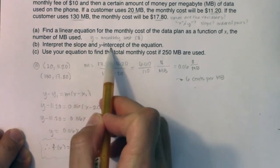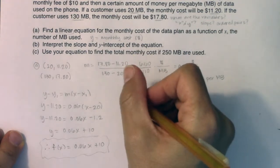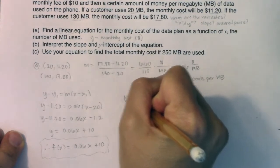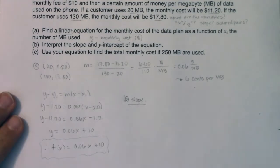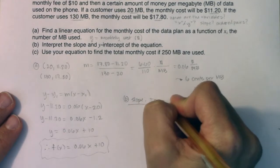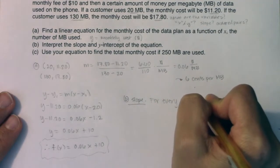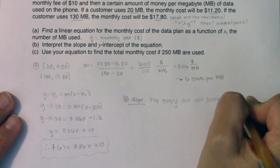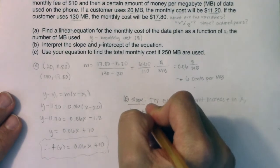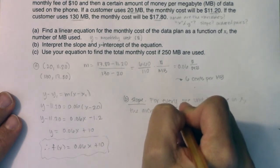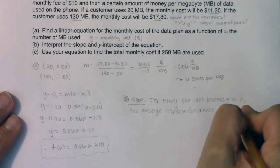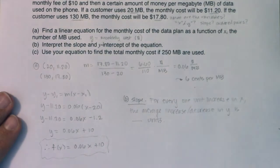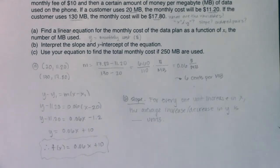Part B says interpret the slope and interpret the y-intercept. So I'm going to owe myself some sentences. Let's go ahead and interpret the slope. I want to give you or start to give you a template for slope because I will ask you to interpret the slope and I want to make sure you can do it. This should say: for every one unit increase in x, the average increase or decrease in y is blank units. Go ahead and take a moment, write that down, and then we're going to start erasing and putting in the correct numbers and the correct context for this particular problem.